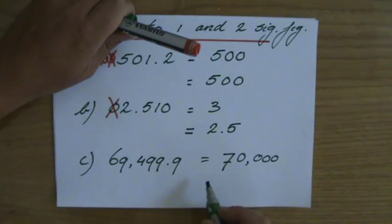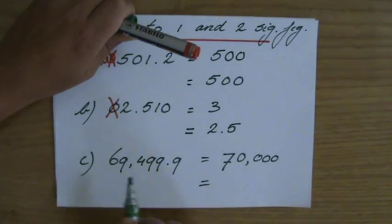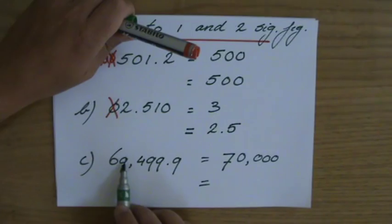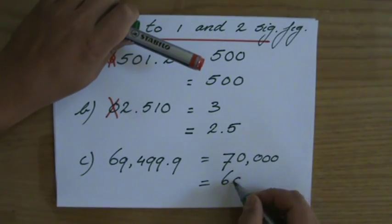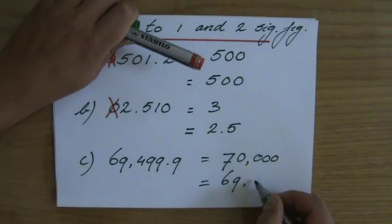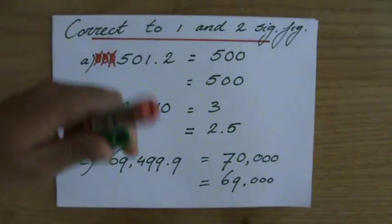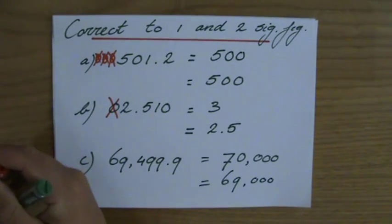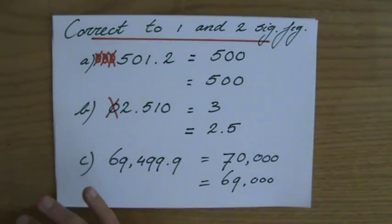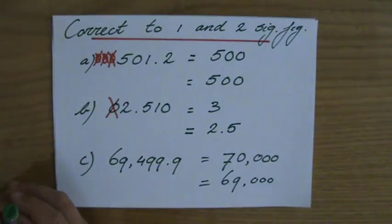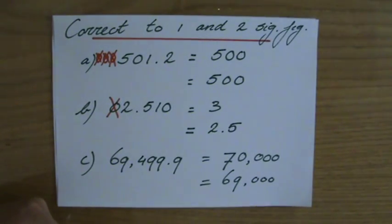For 69,499.9 to two significant figures, my second significant figure is the nine. It either stays a nine or goes up to a ten, and it's going to stay a nine. So to two significant figures that's going to be 69,000. Now have a look at the next video which is only concerned with rounding to three significant figures, which will increase your understanding of this very important topic. I'll see you soon.